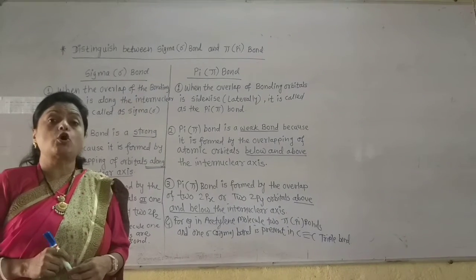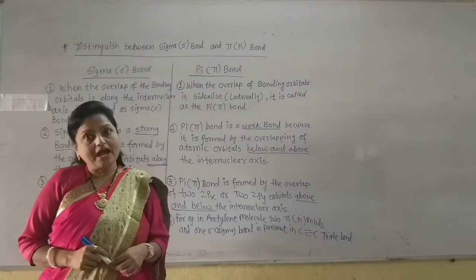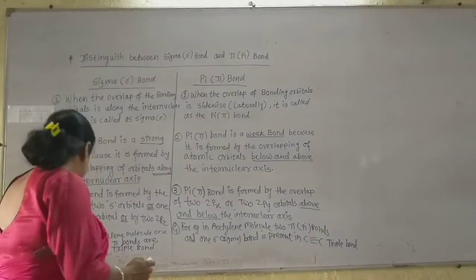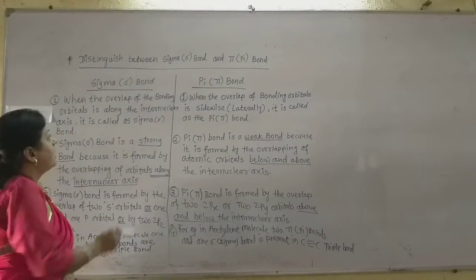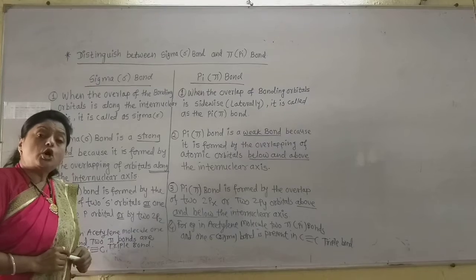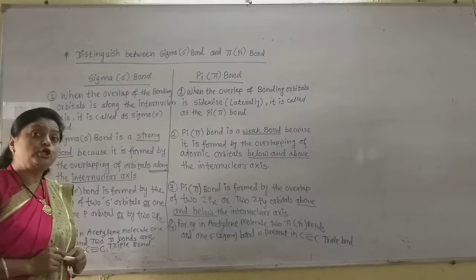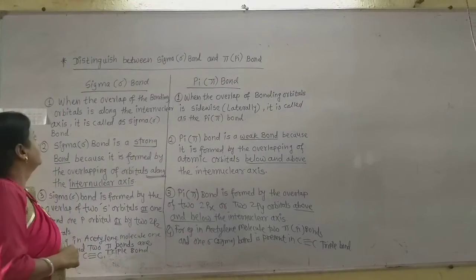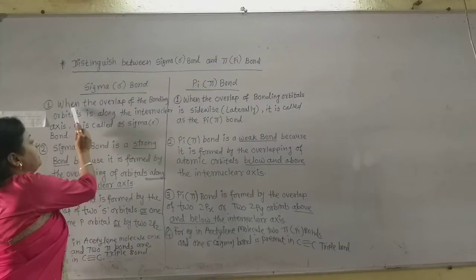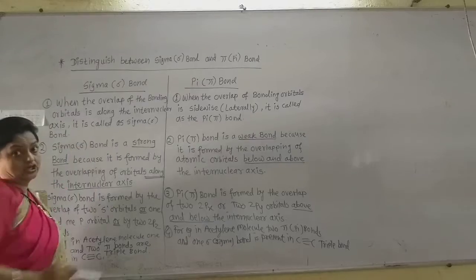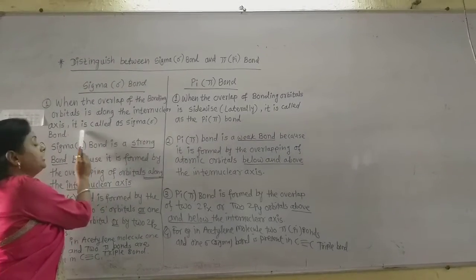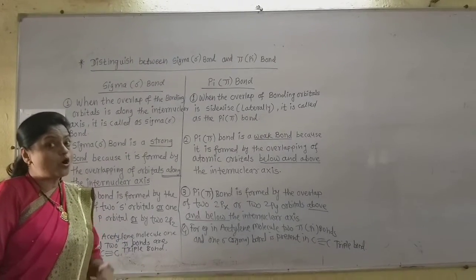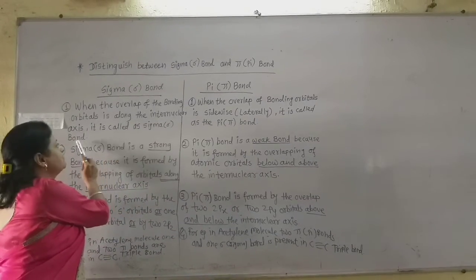Covalent bonds are of two types: sigma bond and pi bond. Sigma bonds are formed due to the overlapping of atomic orbitals of two different atoms along the inter-nuclear axis. When the overlap of the bonding orbitals is along the inter-nuclear axis, that overlap is called sigma overlap and the bond formed is called a sigma bond.